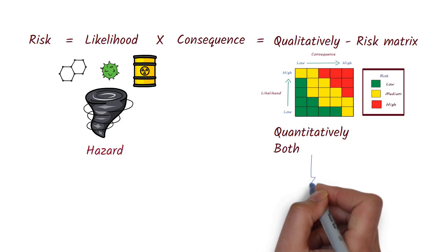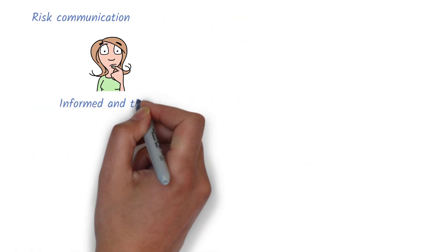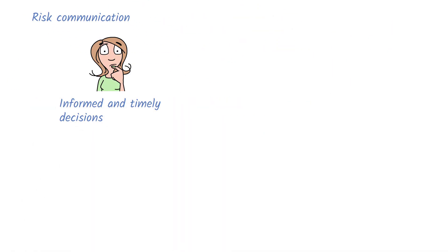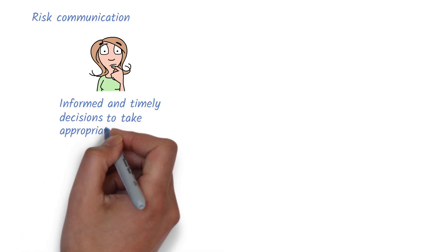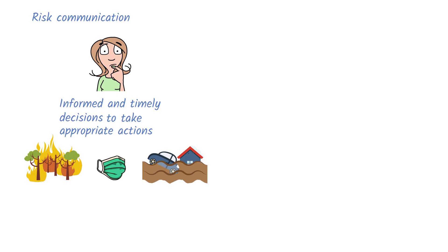Communicating this risk and what to do about it is a core function of public health. It allows people to make informed and timely decisions so they can take appropriate action to protect themselves and others, like moving away from a rapidly moving bushfire, wearing a mask during a respiratory disease outbreak, or avoiding floodwaters during a severe storm.